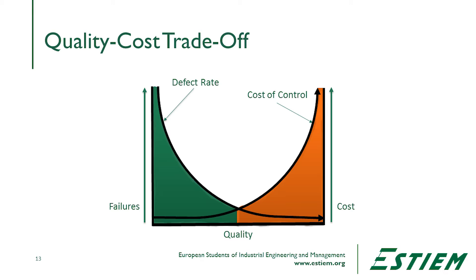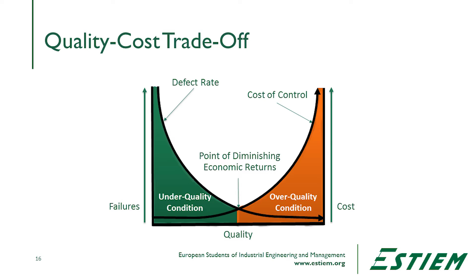Many of you have probably had classes in operations management, and what you've likely seen is a set of curves where, as quality is improving or defects are decreasing, the cost of control is increasing. Following this normally, at the point where the two curves cross in the middle, that's the point of diminishing economic returns, at which point we have either under-quality or over-quality conditions.